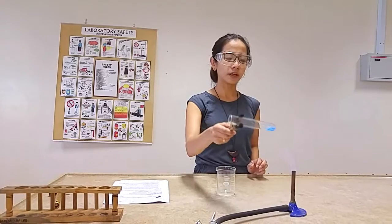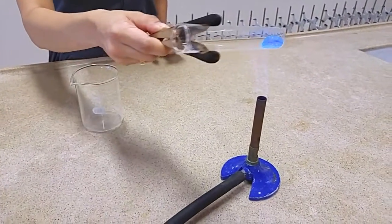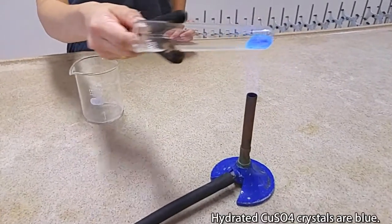Loosen it slightly, then gently put it over the flame. You'll see that water is coming out.